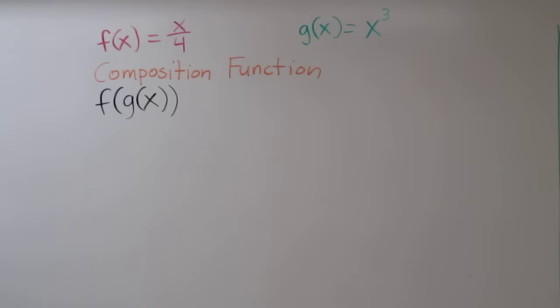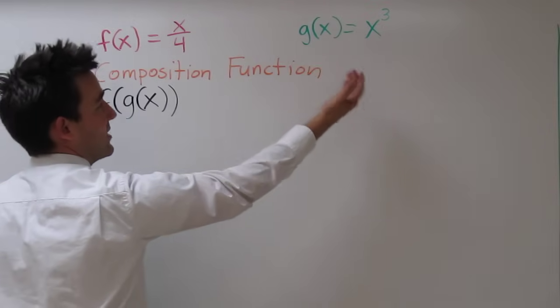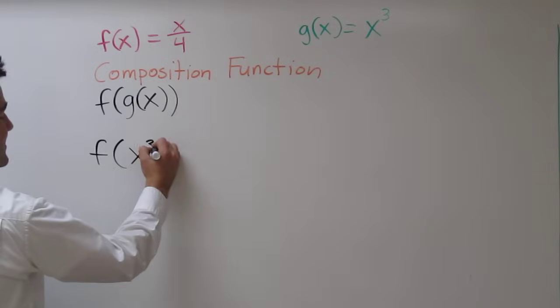Now, to figure out what f of g of x is, let's first look at g of x. g of x is x cubed. So any time we see g of x, we could instead write x cubed. So we'll do that. Now we have f of x cubed.